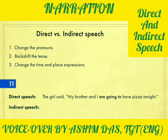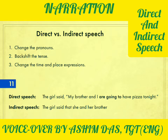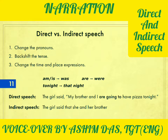Sentence eleven: the girl said, 'My brother and I are going to have pizza tonight.' This is a little tricky. The girl said that she and her brother were going to have pizza that night. With 'I' we put the other person first — 'my brother and I' — but with other pronouns we put the pronoun first: 'she and her brother.' 'Are going to' becomes 'were going to,' and 'tonight' becomes 'that night.'